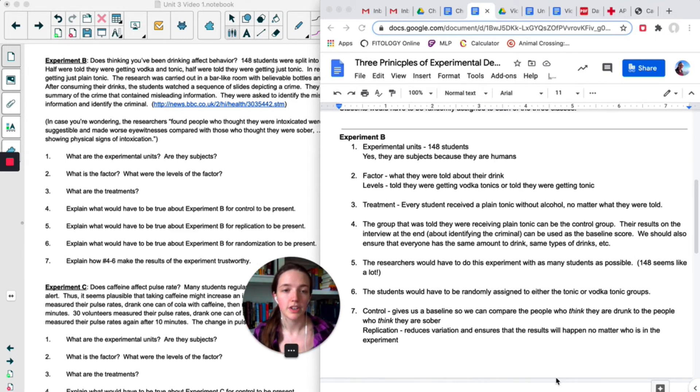Okay, so for control, we could consider the control group to be the group that was told they were getting the non-alcoholic drink and then their results at the end of the experiment could be used as the baseline score. And then just to control for other lurking variables, we would also want to make sure that everyone gets the same amount to drink, the same type of drink, they are in the same environment, like everything else needs to be as similar as possible. So that is important to note with control. There's a control group, which sometimes you can have and sometimes you can't, and then there's also controlling for lurking variables, which is where you do everything in your power to make sure that there are no other differences between the different treatments.